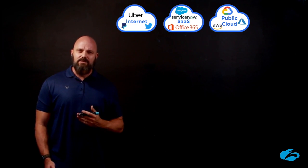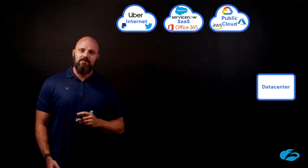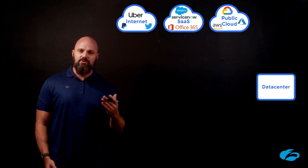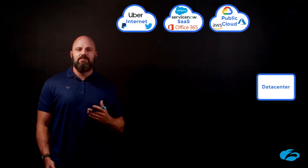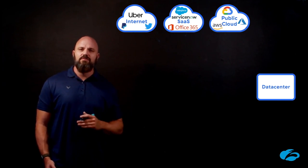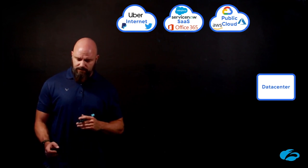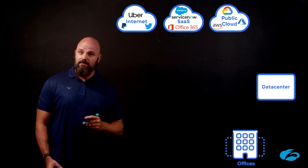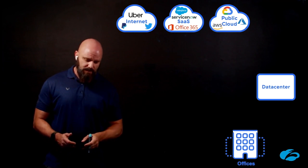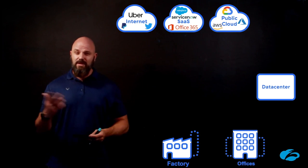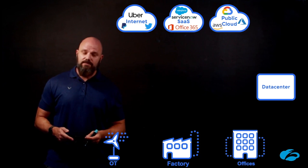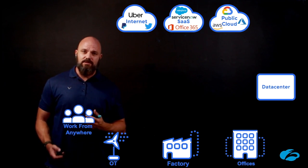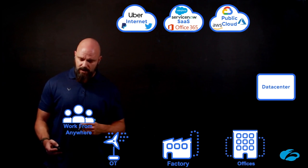Then of course we have the public cloud — the big ones: Azure, GCP, AWS. But where else do our applications live? We have applications that still reside at the data center. And the cool part about the Zero Trust Exchange is it doesn't really matter where the applications live — we'll always steer users to those applications as quickly as possible. Sometimes users can live in offices, sometimes in factories, and maybe those factories have OT devices. Then of course we have our work-from-anywhere population — people at home, Starbucks, or even abroad.